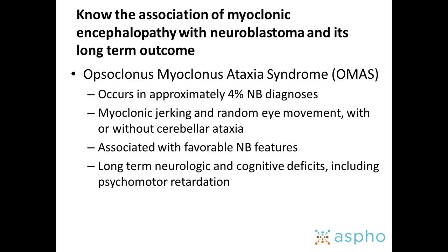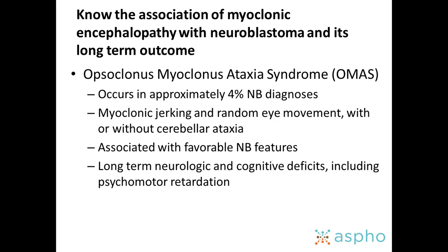The board would like you to know the association of myoclonic encephalopathy with neuroblastoma and its long-term outcome. Neuro-myoclonic encephalopathy — also known as opsoclonus myoclonus ataxia syndrome — occurs in about 4% of children with neuroblastoma. It is characterized by myoclonic jerking, random eye movements, with or without cerebellar ataxia, and is generally associated with a very favorable neuroblastoma. These children have favorable long-term tumor prognosis; however, they have long-term neurologic and cognitive deficits. This appears to be an autoimmune phenomenon treated with immunosuppressive chemotherapy, steroids, or IVIG, but it can be recurring and cause long-lasting developmental delay.